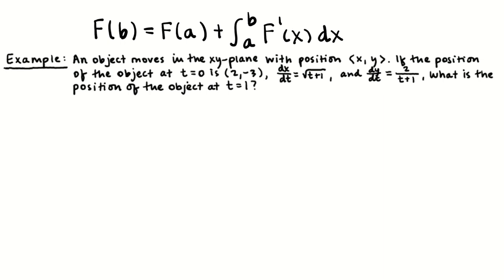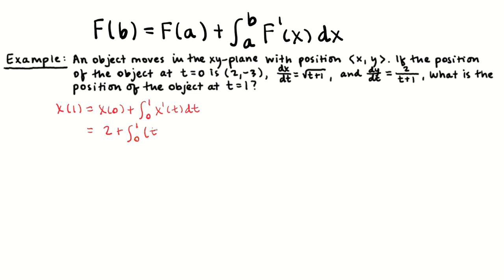We're going to apply the same idea and say that x(1) is equal to x(0), which they gave us, plus the integral from 0 to 1 of x prime of t dt. We know that x(0) equals 2, and x prime of t — that's dx/dt — is going to be the square root of t+1, which I'll write as (t+1) to the 1/2 power.